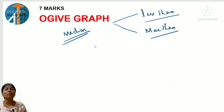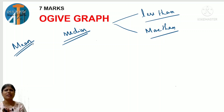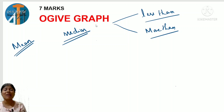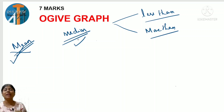Median can be represented graphically. Another question asked is: which cannot be represented graphically? Among the three measures - mean, median, mode - which cannot be represented graphically? The answer is mean. Mean cannot be represented graphically because it uses the formula: sum of observations divided by number of observations. We cannot represent mean graphically, but median can be represented graphically.